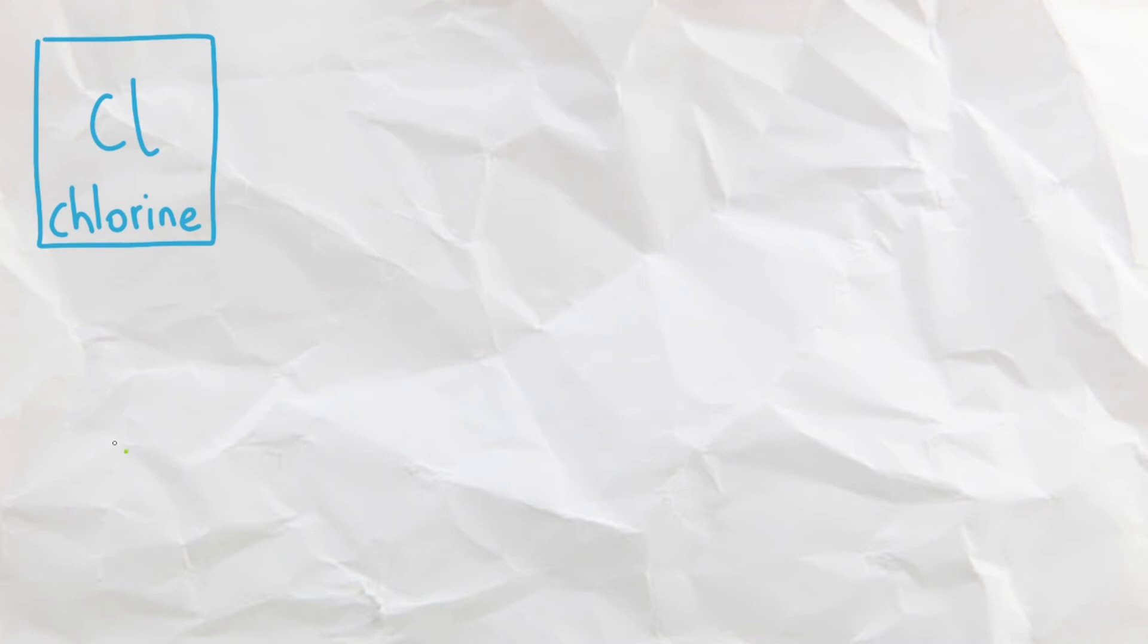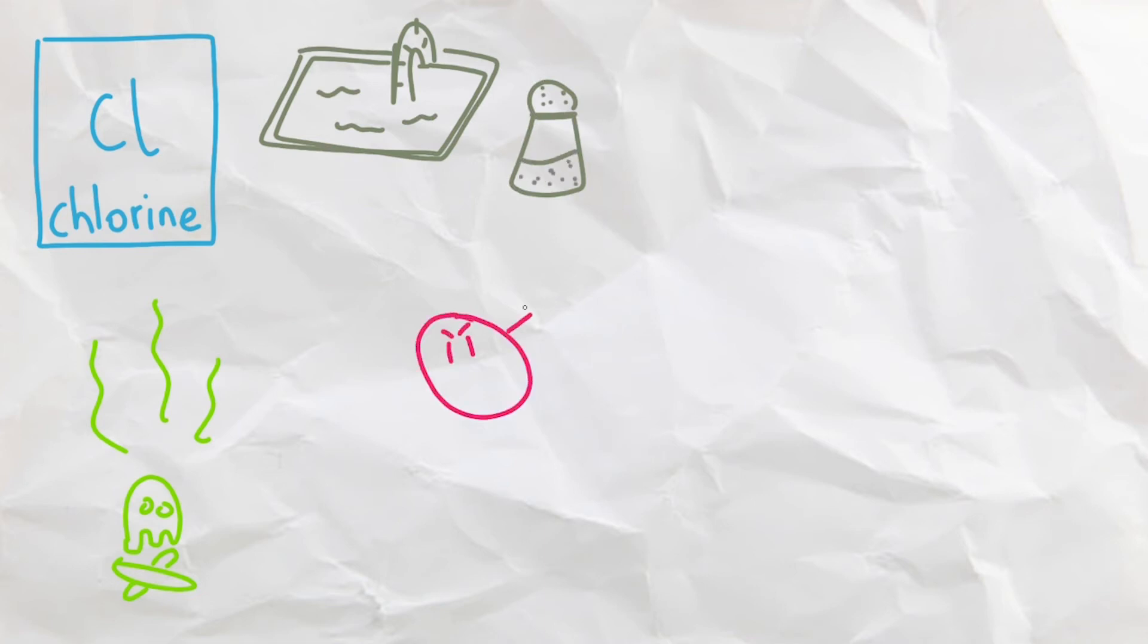Next, we have chlorine, which is a toxic yellow-green gas known for its nostalgic swimming pool smell, and of course, table salt. Chlorine is very efficient at killing bacteria, so that's why we use chlorine as a disinfectant or to treat drinking water.